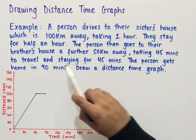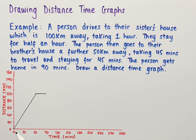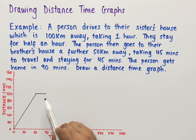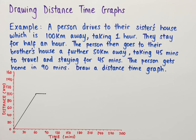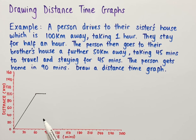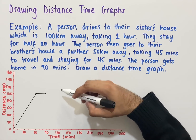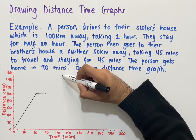The person then goes to their brother's house a further 50 kilometers away, taking 45 minutes. Starting from 90 minutes, we add 45 minutes to get 135 minutes on the x-axis — halfway between 120 and 150. The person is now a total of 150 kilometers from home, since they were already at 100 kilometers and are adding a further 50. So we plot our point at (135, 150).